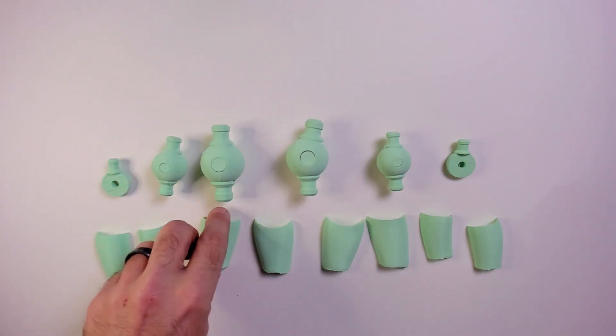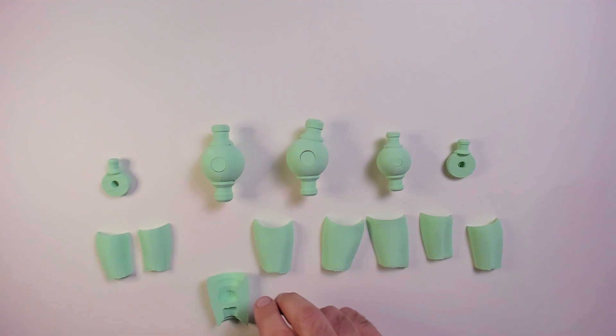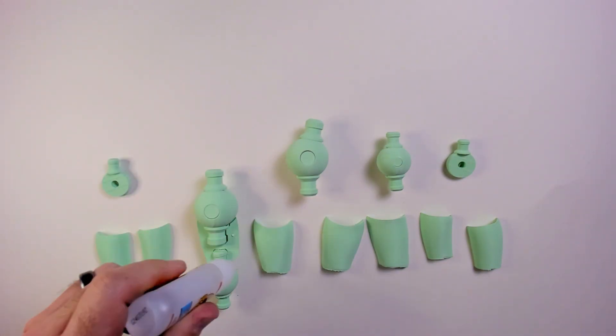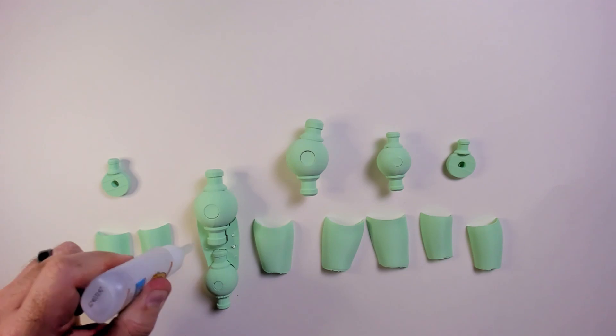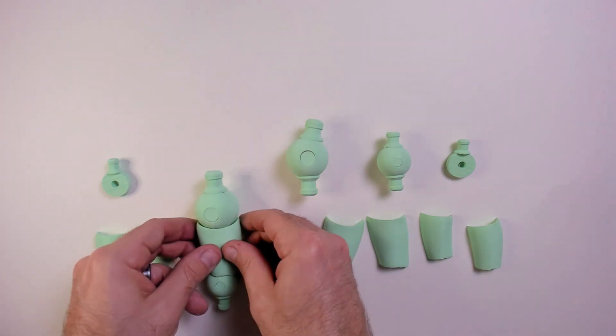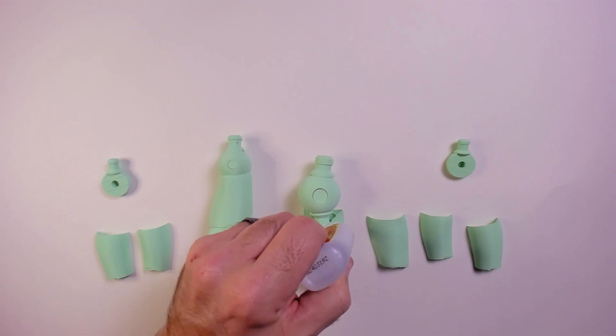Alright, let's get these arms put together. I put the shoulder and elbow hinges in place. The shoulder hinges are slightly different on each end, so make sure to check the fit before gluing in place. Then the same for the other arm.